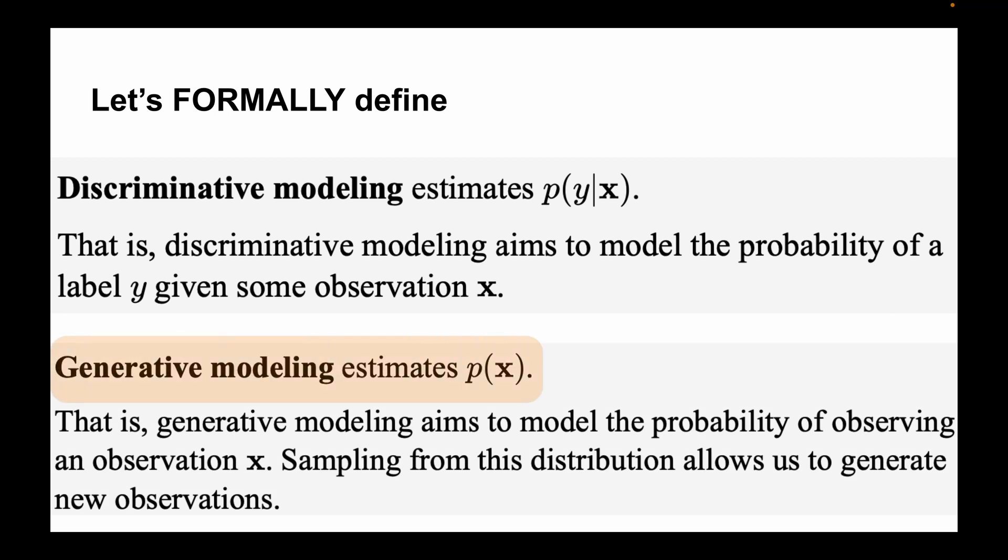This generative model estimates the probability of X. Only the probability of X. Generative modeling aims to model the probability of observing an observation X. Sampling from this distribution allows us to generate new observations. And that's why random sampling is important.